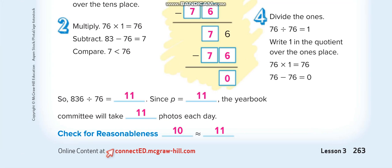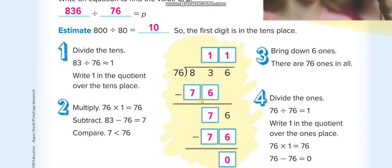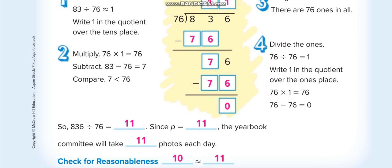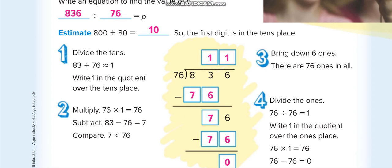This is page number 263. When we divide two numbers, the number inside — the bigger one — is known as the dividend, and the smaller number outside is the divisor. Here is the remainder at the end, and the answer of division is the quotient.